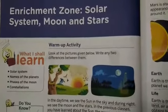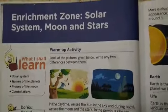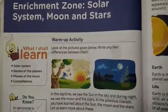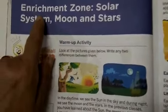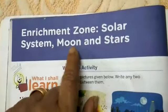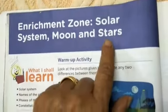Good morning, children. Take out your general science reader and we begin with enrichment zone: solar system, moon and stars. Turn to the next page, revision zone, page number 120.